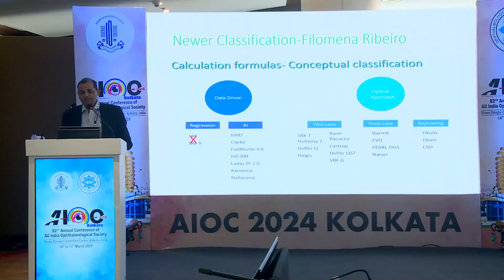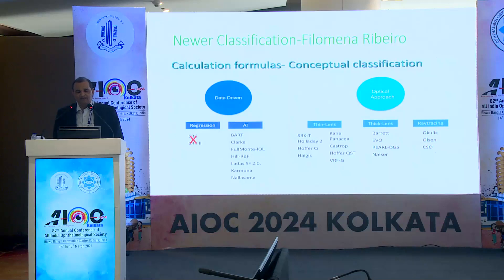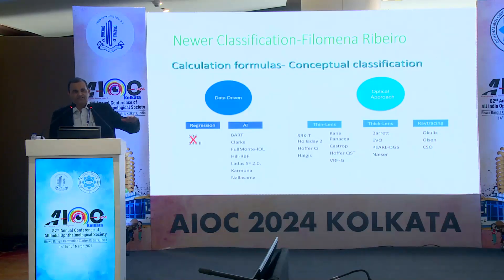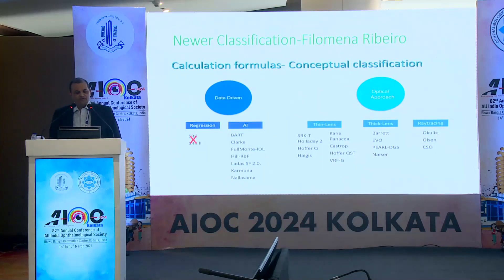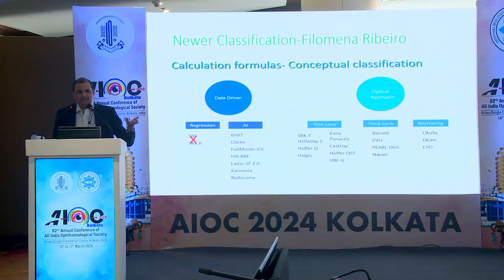Another approach is theoretical optics — the optical approach. Gaussian optics includes thin lens-based and thick lens-based formulas. Thin lens formulas divide into older generation (third generation: SRKT, Holladay 2, Hoffer Q, Haigis) and newer generation formulas like PEARL DGS, Panacea, Castrop, Hoffer QST, and VRFG. Thick lens-based formulas, which one should prefer, include Barrett, EVO, Pearl DGS, and Naeser.